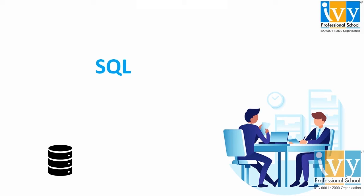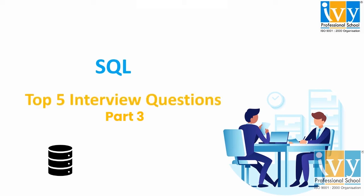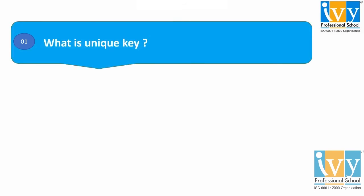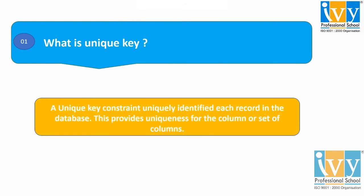Today I am going to discuss part 3 of the top 5 interview questions from the topic SQL, i.e. Structured Query Language. These questions are frequently being asked by the top companies during the interview. So let's begin. Question 1: what is a unique key? A unique key constraint uniquely identifies each record in a database. A unique key is a single field or combination of fields that ensures all the values stored in the column will be unique, providing uniqueness for the column or set of columns.